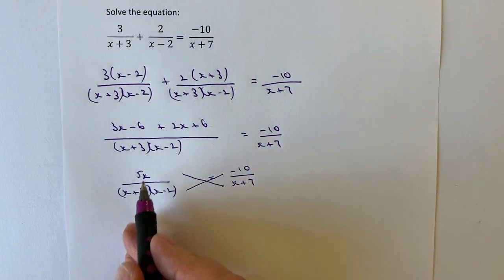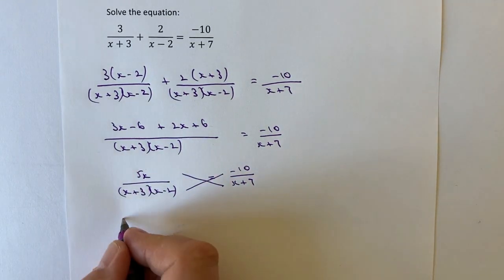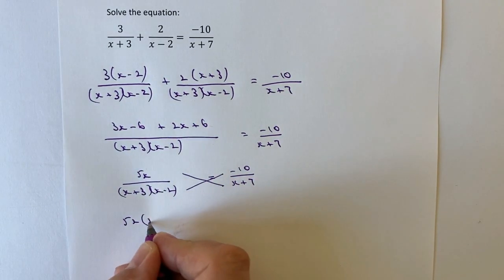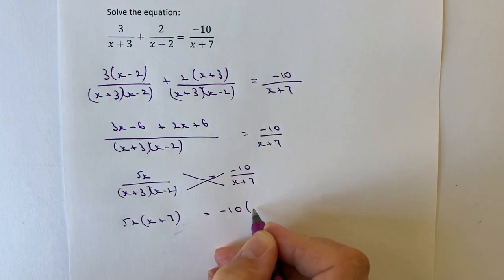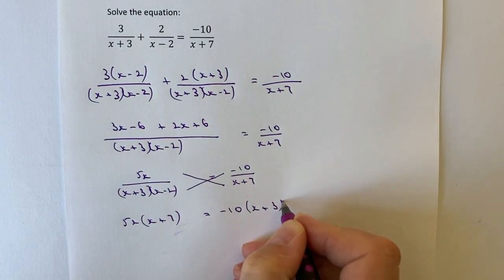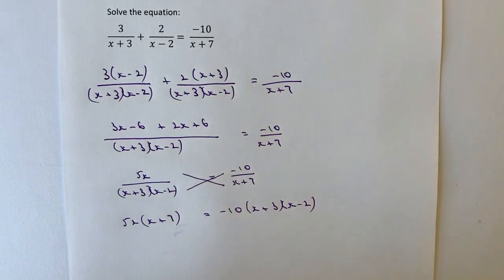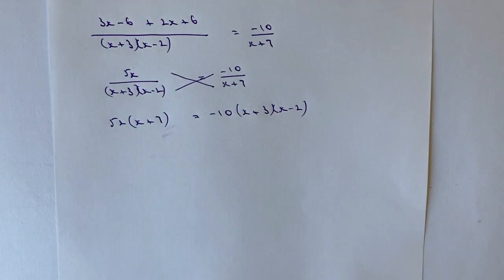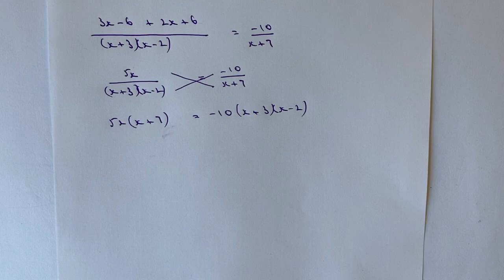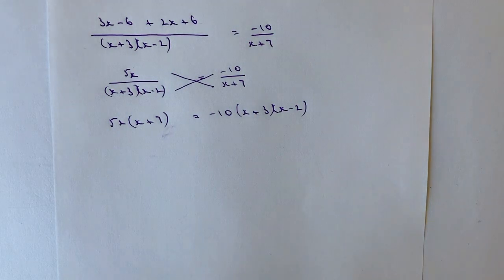I'm now going to multiply this through. I'm going to get 5x times (x+7), and that's going to equal minus 10 times (x+3) multiplied by (x-2). I know that this is going to be going on for a little bit, but hopefully you can see that it's going to start to take shape fairly soon. What we're going to end up with is probably going to be a quadratic equation, and we should be able to solve it, I'm hoping.